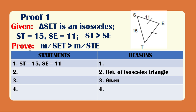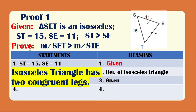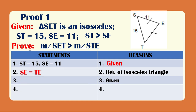For the first statement, ST is 15 and SE is 11, so the reason is 'given.' The second reason states the definition of isosceles triangle — an isosceles triangle has two congruent sides. Looking at the figure, SE and TE have the same marking, meaning SE is equal to TE. For the third reason, we have 'given,' and the last given is ST is greater than SE.